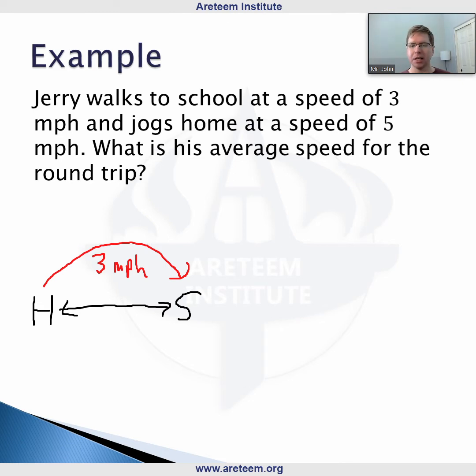And then the other direction, he's coming home at a speed, he's jogging home, excited to be done with school of 5 miles per hour. So these are the speeds that he's going back and forth from school.